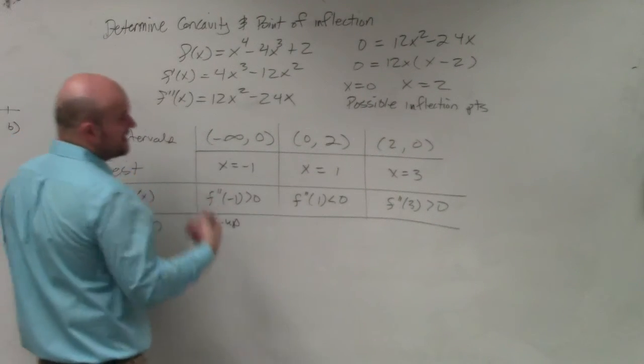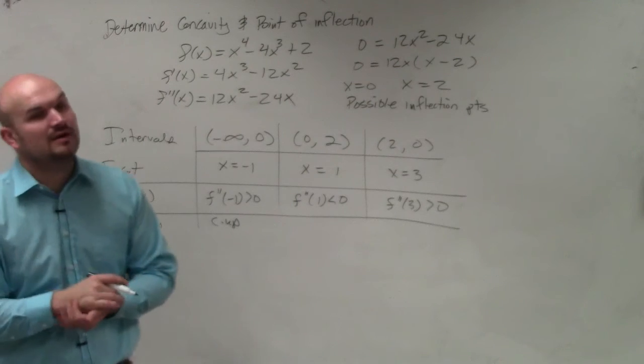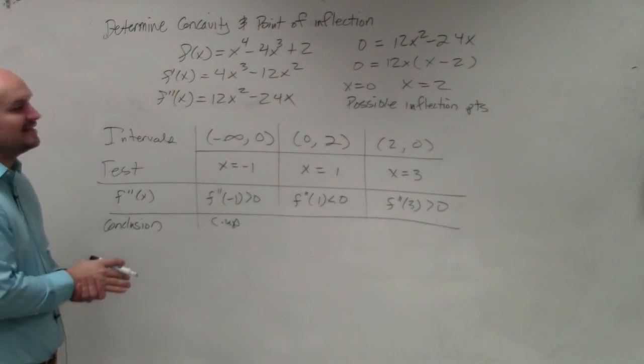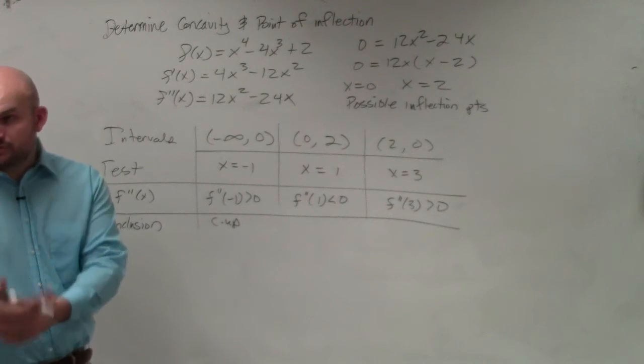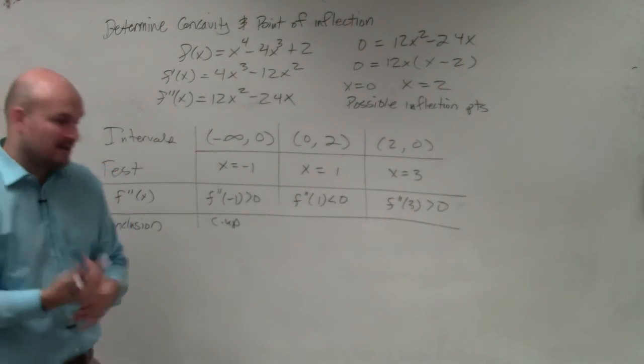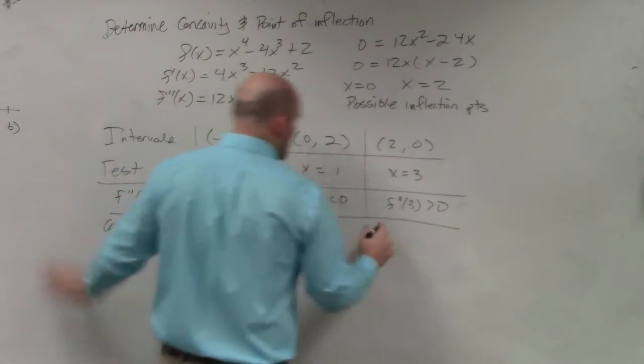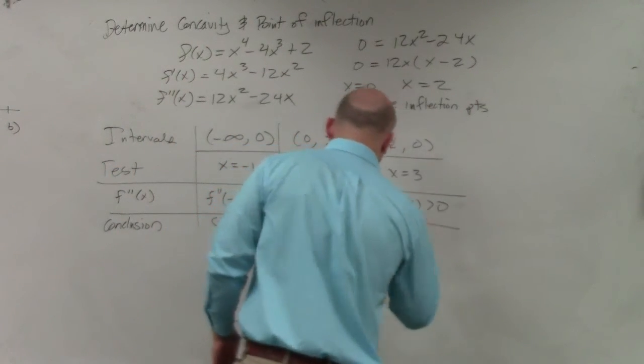So here, you could say, since f double prime of one is less than zero, our f of x is going to be concave down on the interval zero to two. That's what you'd want to write all the way out. But I'm just going to save myself some space. And then this one is concave up.